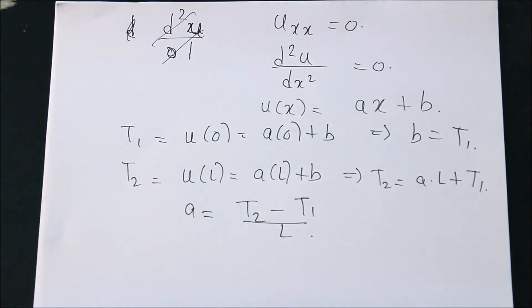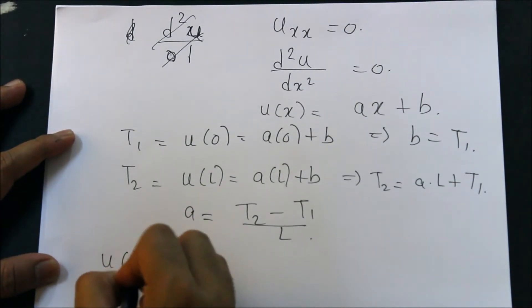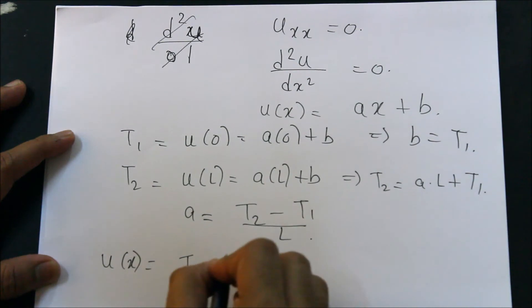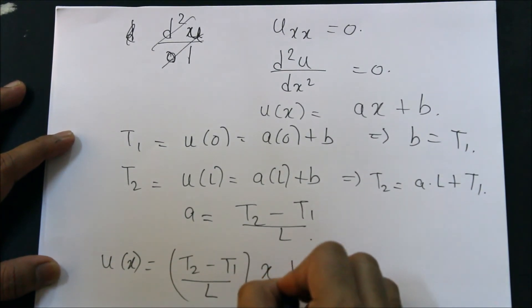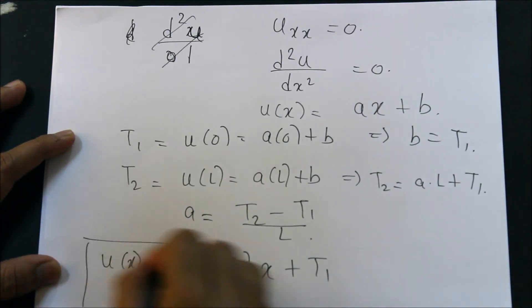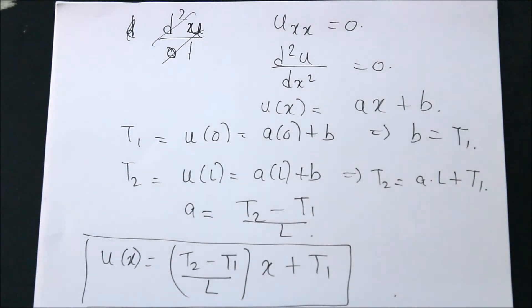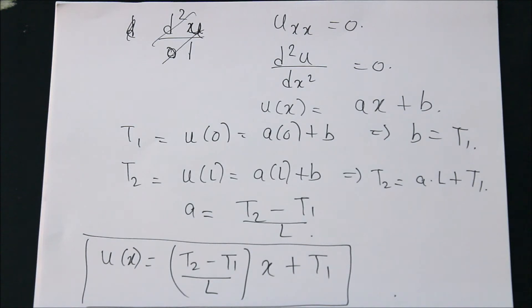These are my constants. Therefore, what is your U of X? The temperature is nothing but (T2 minus T1) upon L into X plus T1. Once you know the temperature at the end points, you can tell me the temperature at any point, provided the situation is independent of time.